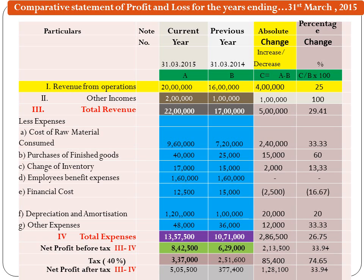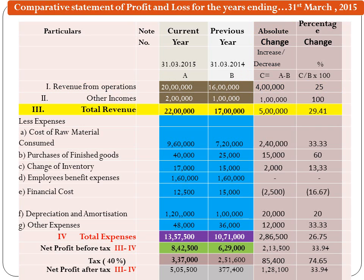For example, Revenue from Operations: current year ₹20 lakh, last year ₹16 lakh, absolute change ₹4 lakh, percentage change = 4 lakh ÷ 16 lakh = 25%. Another example, Total Revenue: current year ₹22 lakh, last year ₹17 lakh, absolute change ₹5 lakh, percentage change = 5 lakh ÷ 17 lakh = 29.41%.